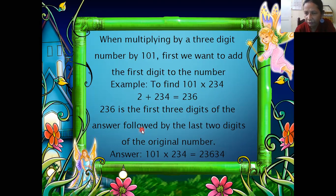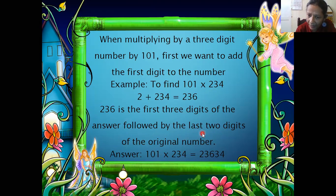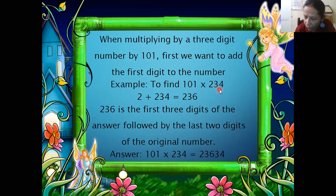Now what you have to do, as I told you, you have to follow this with the last two digits. You have to copy the last two digits of the original number. The original number is 234, so the last two digits are 34. You just copy this 34 to get the answer: 23634.